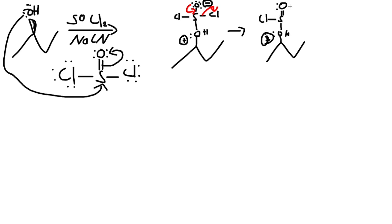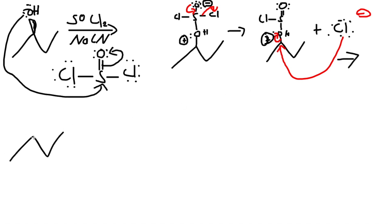The chlorine that was kicked off is now in solution with a negative charge. This chlorine comes back and does an SN2 attack — it acts as the nucleophile and attacks from the backside. While it does this, it kicks off the entire thionyl-OH leaving group structure. Inversion happens, so now the chlorine has a dash because the OH had a wedge before.